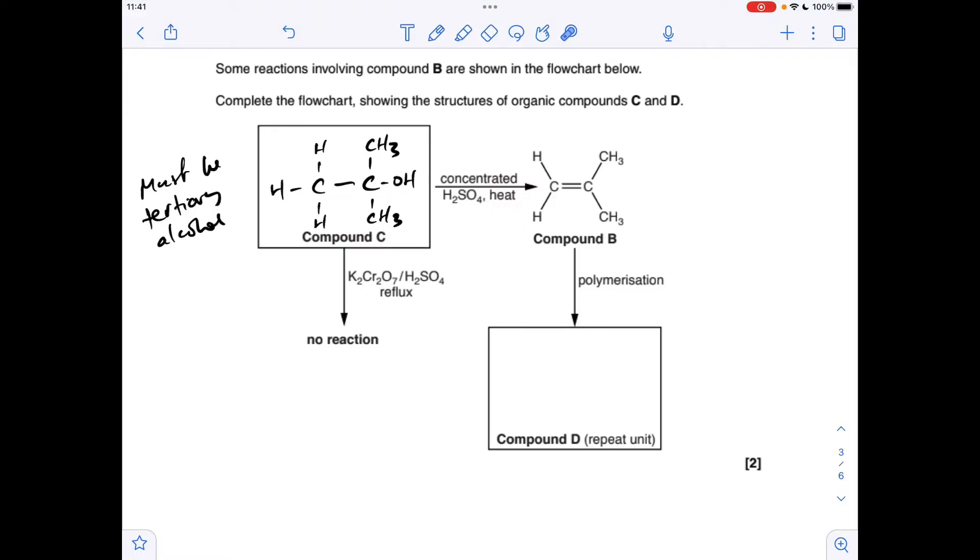And then the final thing we've got to do is just show the repeat unit for the polymer formed when compound B is polymerised. So we literally just break that double bond into a single bond, and we put some end bonds on and stick it in a bracket. The bracket wasn't actually essential here. But if you do put the bracket on, you've got to make sure these bonds stick through the bracket.